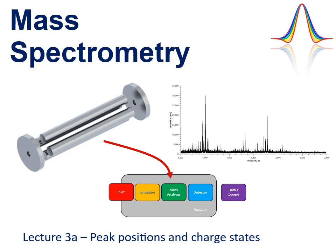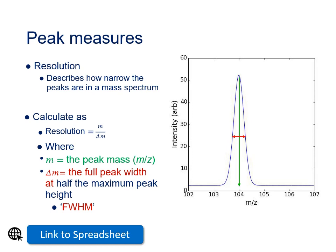Welcome to the material for the third workshop. In this lecture we'll be looking at how to work out peak positions and charge states of ions in mass spectra. In the last lecture we looked at a variety of different spectral measures and features, like resolution, resolving power and noise. And now we're going to look at peak positions, thresholds and charge states.